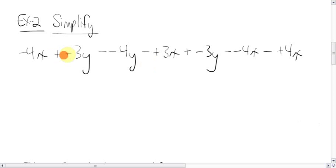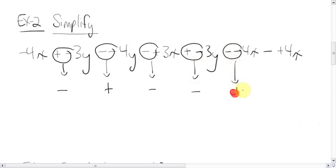First, get rid of the double signs. That is different minus, same plus, different minus, different minus, same plus, different minus. Now bring everyone else down. Negative 4x, 3y, 4y, 3x, 3y, 4x, 4x.